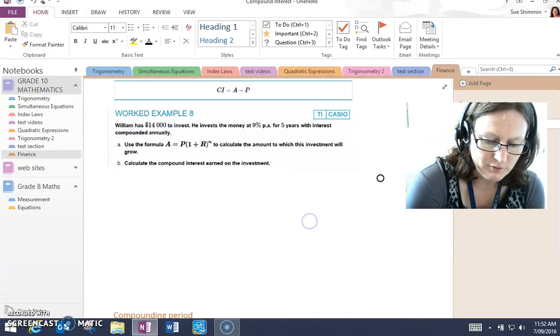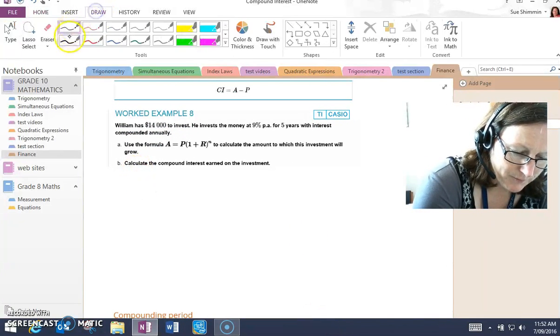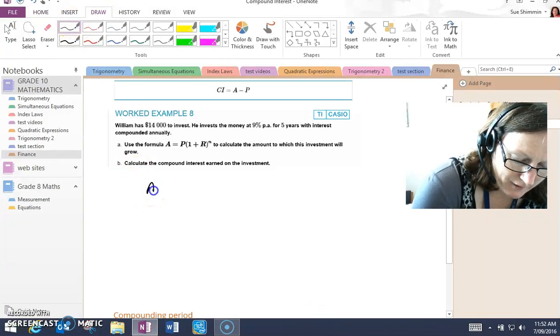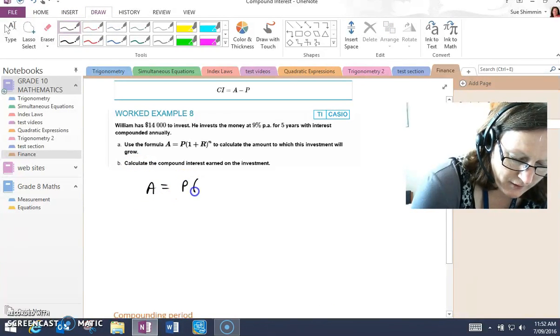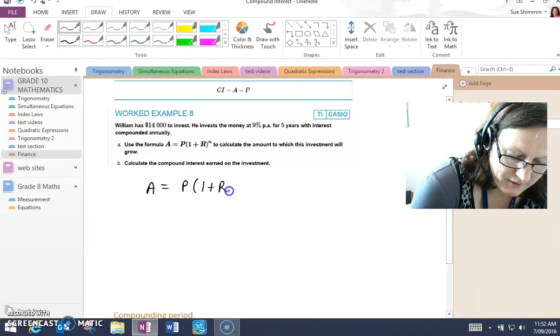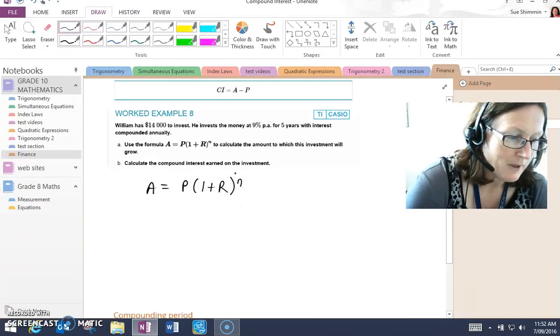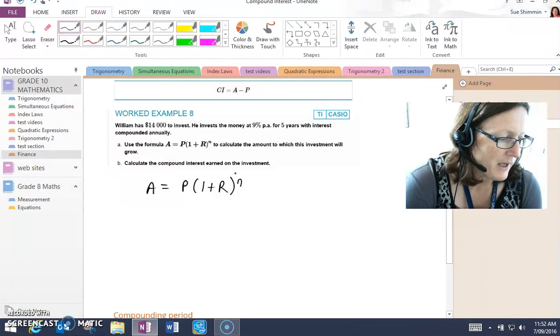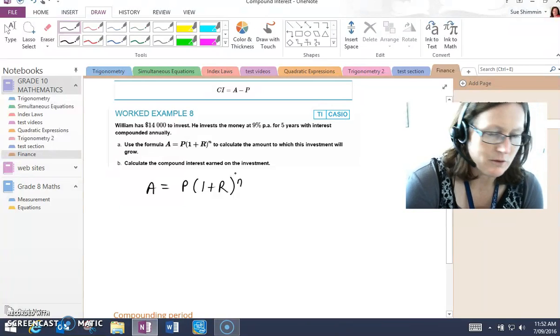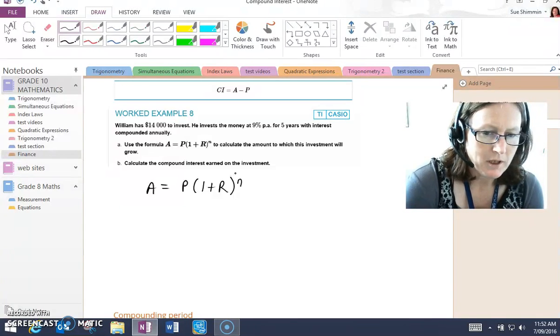Let's write the formula down. A equals P, one plus R to the power of N. A is the amount or future value of the investment. P is the principal.